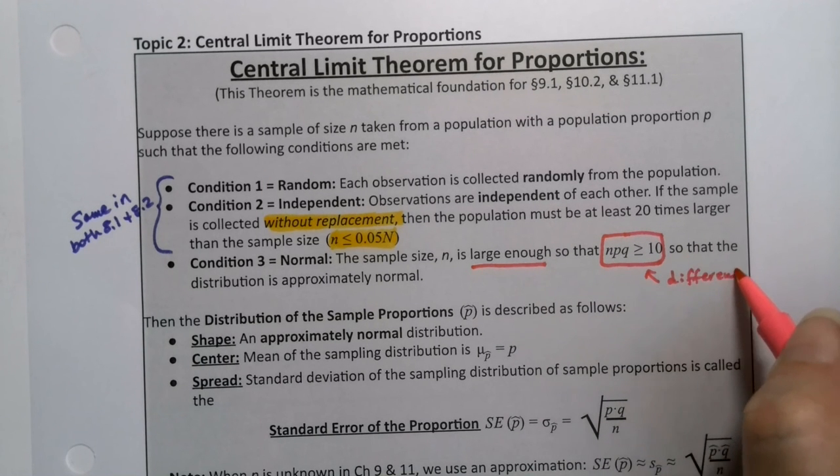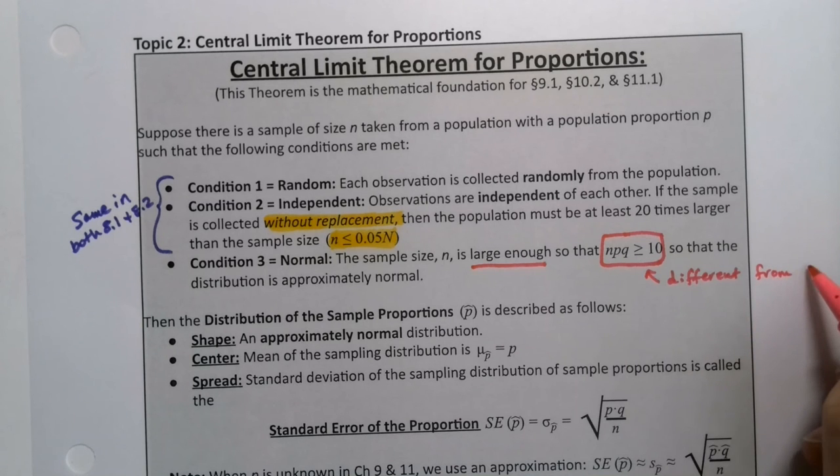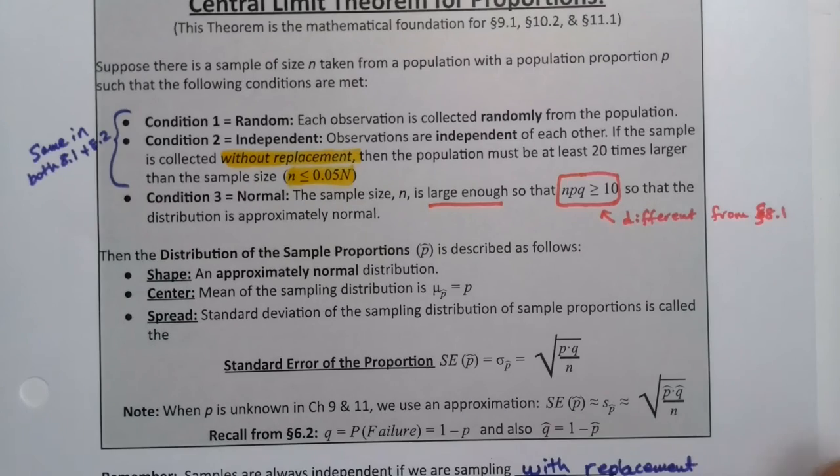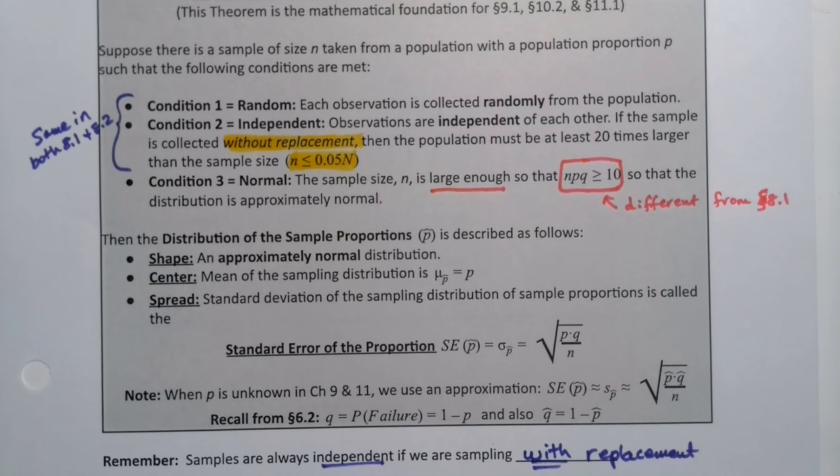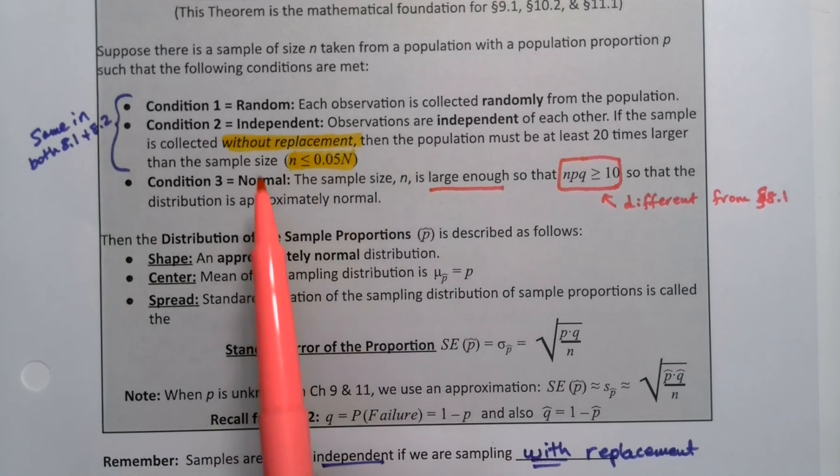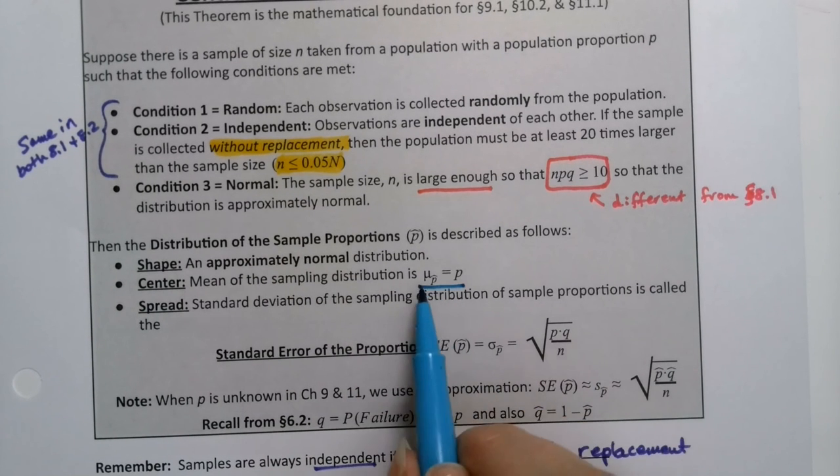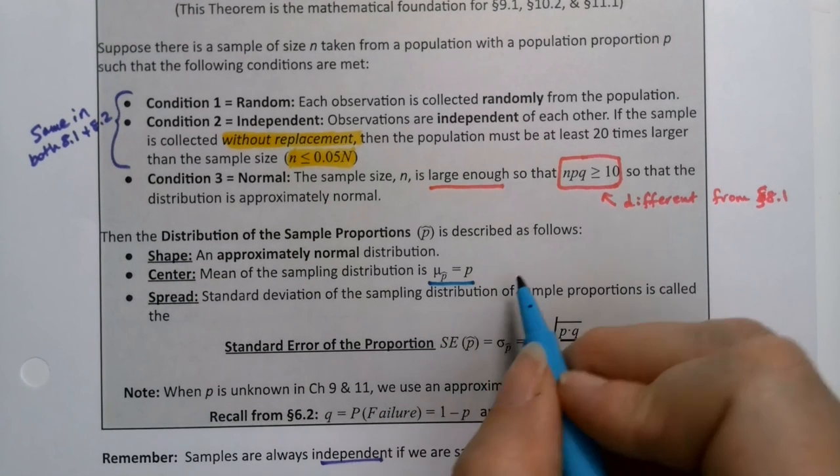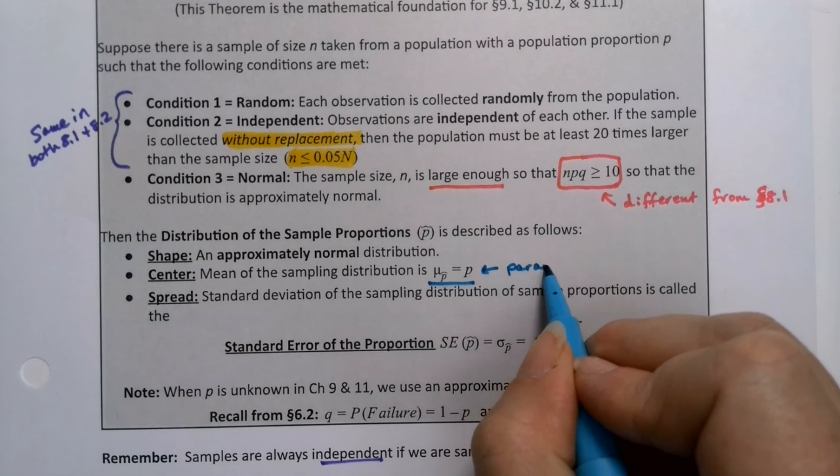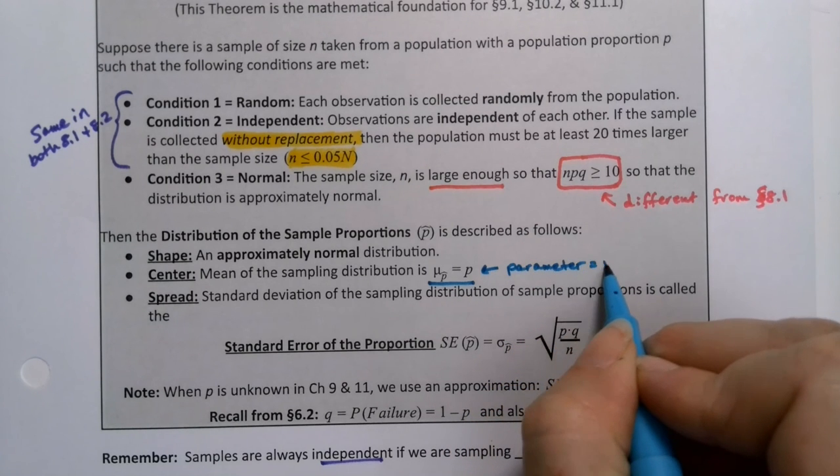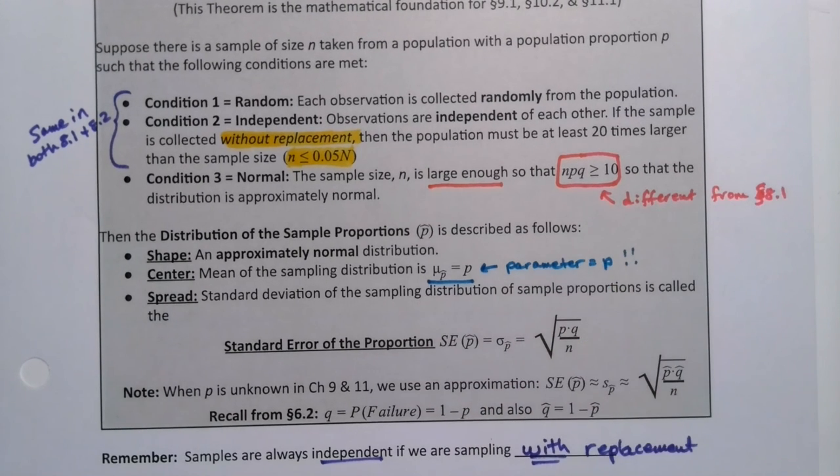8.1 just wanted it to be bigger than 30. So for means, you want it to be bigger than 30. But for proportions, it's a little bit different. You need N times P times Q to be greater than 10 or equal to 10. If that is the case, if those three conditions are met, then we will have a normal shape. It will have a center that is the mean of the P-hats that is equal to P. This is your parameter.